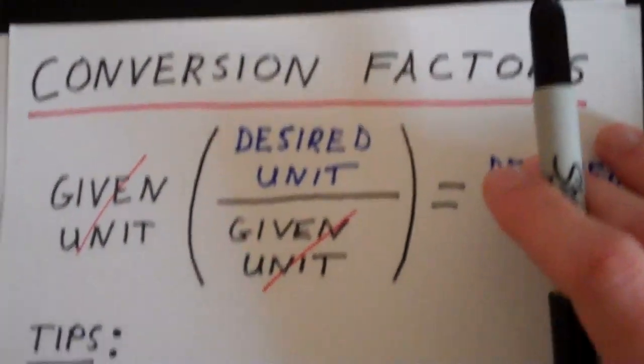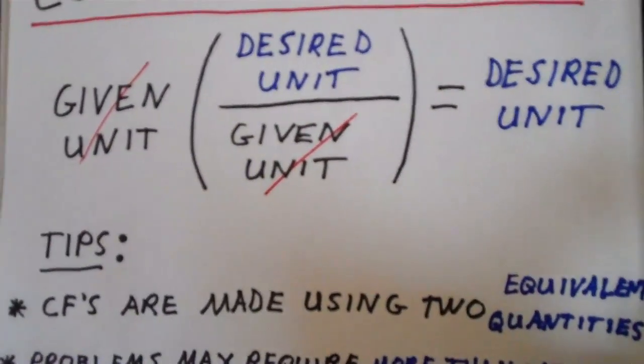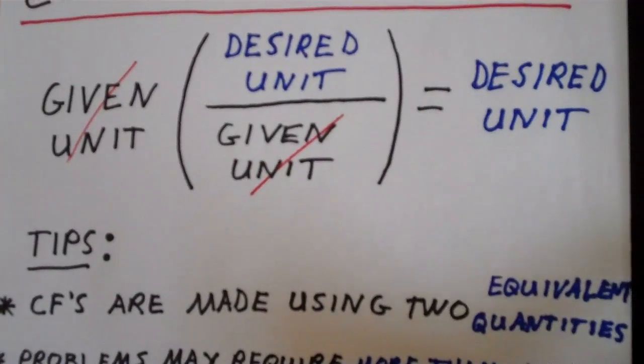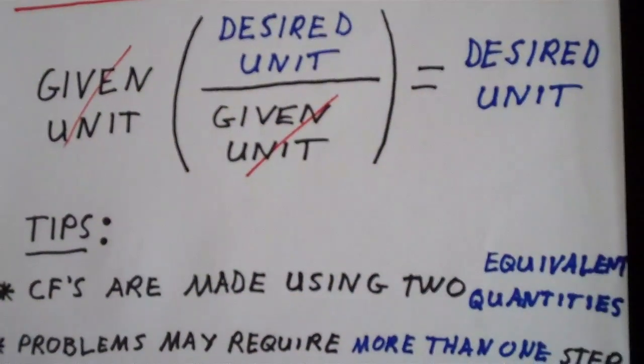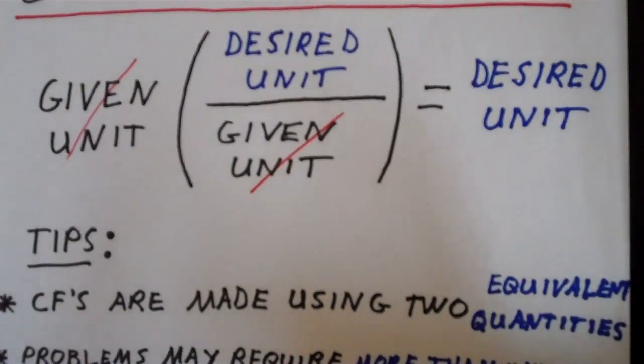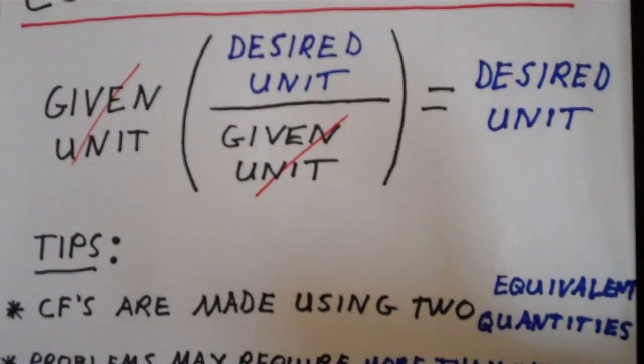A couple of tips on working with conversion factors. Number one, conversion factors are made using two equivalent quantities. So if the quantities are not equivalent in some way, then that can't really be a conversion factor.